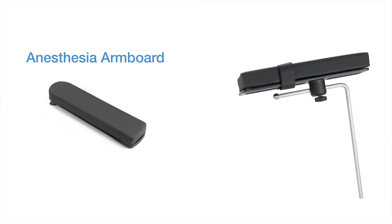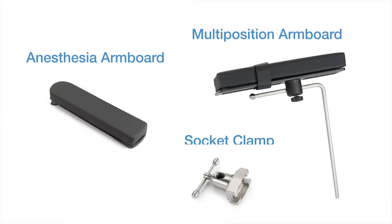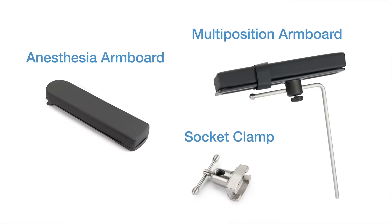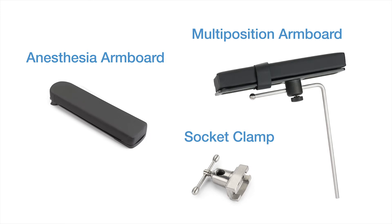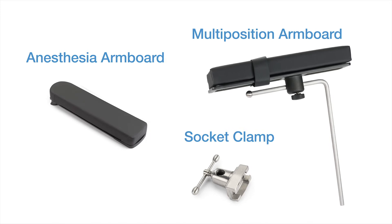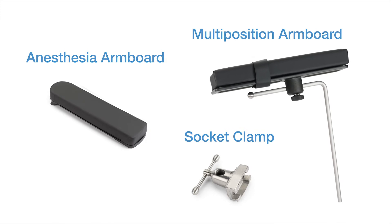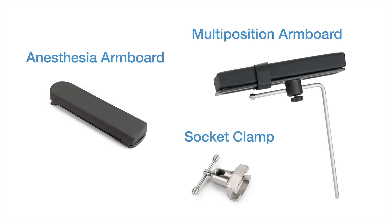The OT-1000 series table is equipped with both an anesthesia armboard to help position the arm on the non-operative side of the body, and a multi-position armboard to help position the arm on the operative side of the body, to ensure patient arms are properly positioned during the procedure.